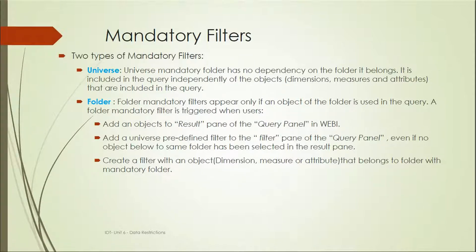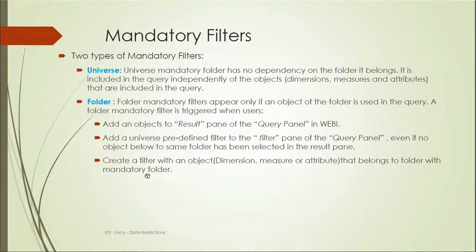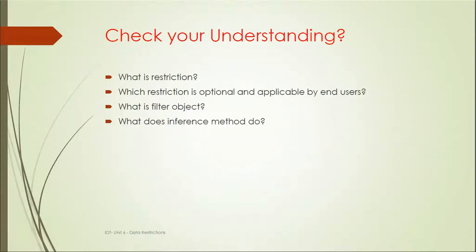There are two types of mandatory filters: universe level and folder level. A universe mandatory filter has no dependency on the folder it belongs to and is included in the query independently of the objects. A folder-level filter appears only if an object from that folder is used in the query — a folder mandatory filter is triggered when users add an object from that folder. In the query panel of Web Intelligence Rich Client, when we add objects and a universe predefined filter to the query panel, the objects added will be affected by those filters.